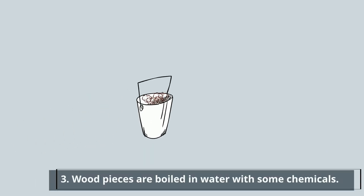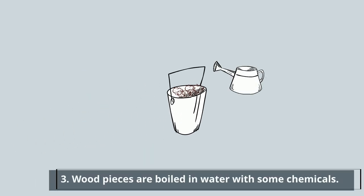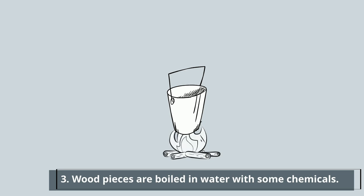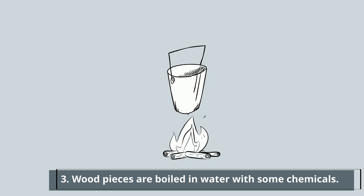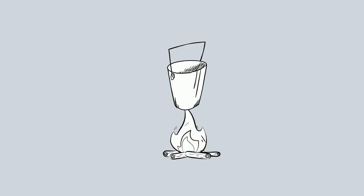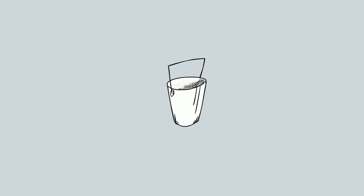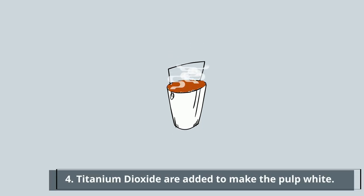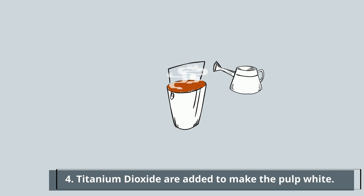Next, the trees are boiled in water with some chemicals, becoming a pulp. Titanium dioxide is added to make the pulp become white.